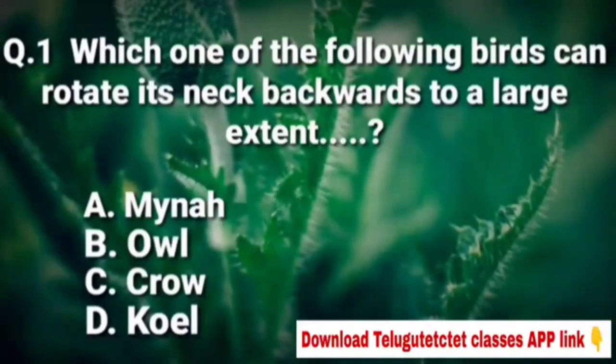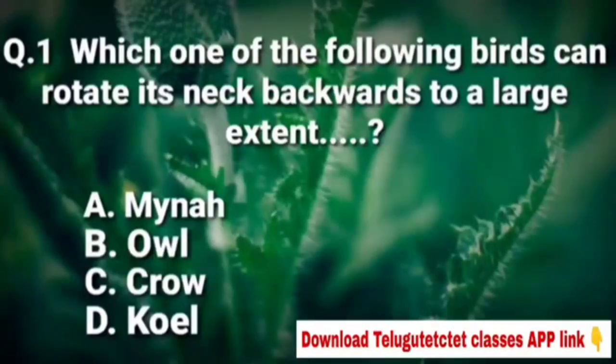Option A is minor, option B is oval, option C is crow, and option D is coil.